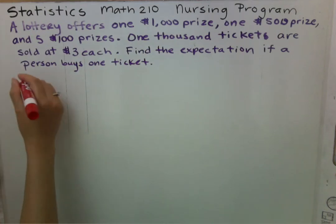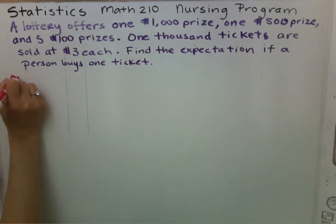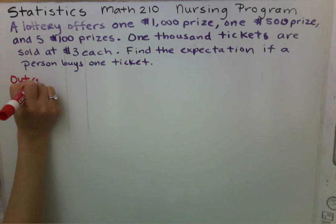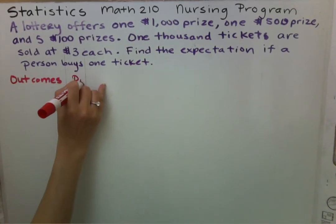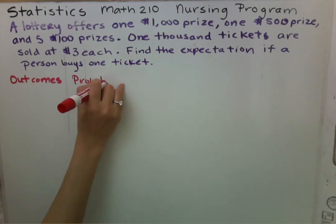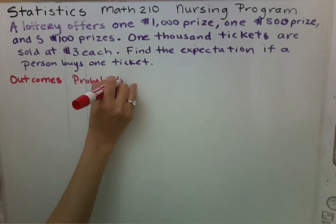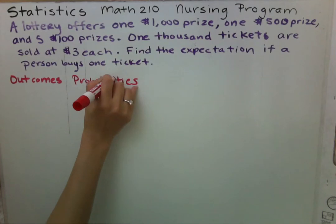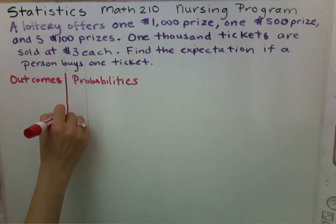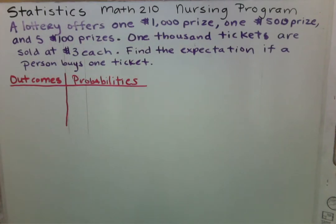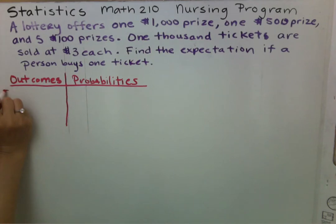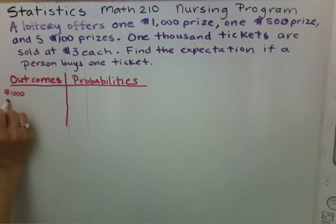The basic premise is that we need to know what the outcomes are and the probabilities, and we're going to make a chart. The outcomes are: winning a $1000 ticket, winning a $500 ticket.